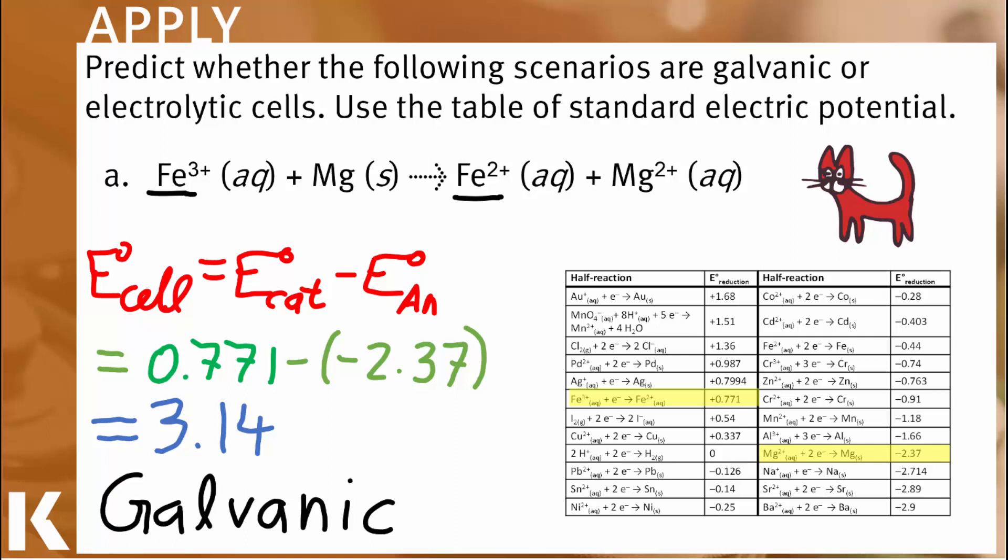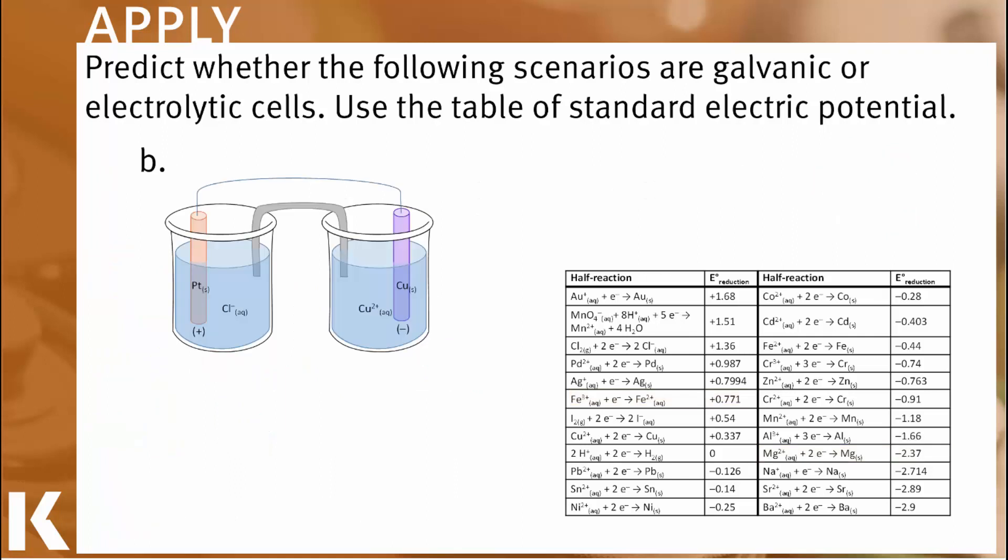Not too bad, right? Let's look at another. Here, we have a cell diagram, and immediately, we can see that there is no power supply. So we're automatically suspecting that this is not electrolytic, that this is galvanic.